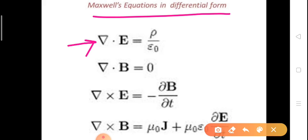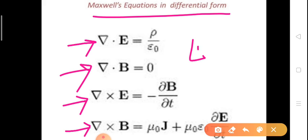Similarly, we have the differential forms. For the first Maxwell equation, Gauss's law in electrostatics; for the second, Gauss's law in magnetics; for the third, Faraday's law; and for the fourth, Ampere's law. These four equations are the differential forms of Maxwell's equations.